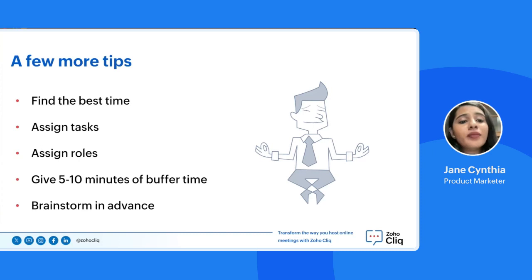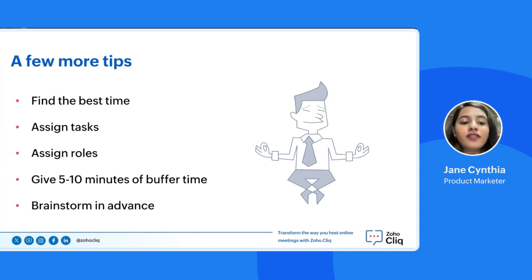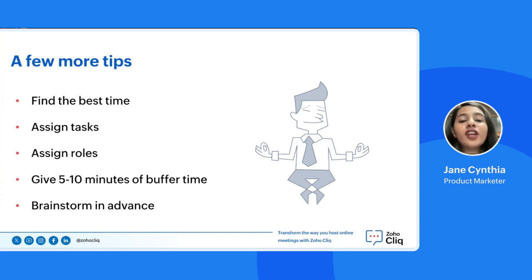Brainstorm in advance. Ahead of time, you could invite participants to brainstorm before the meeting via a virtual whiteboard. Your participants could ask questions, review ideas, or even make suggestions before your meeting. This process can make your meeting more productive and help your participants get involved. To make your meeting more interactive, you can also use ZohoClick's whiteboard feature where you can collaborate instantaneously, brainstorm with your teammates, and share ideas on the go.